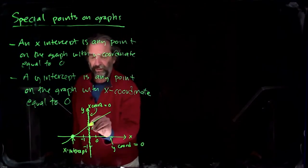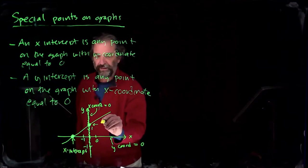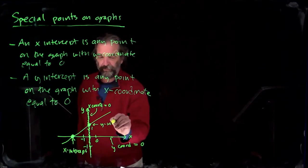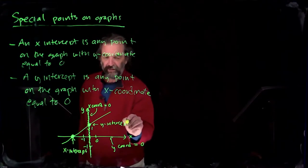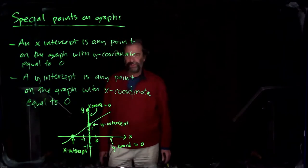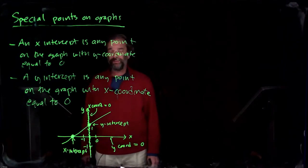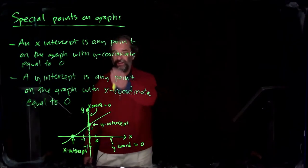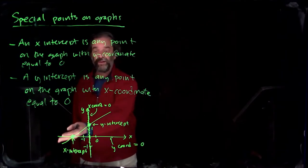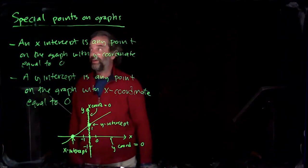And up here, where it crosses the y-axis, we would call that the y-intercept. So if the graph is the graph of a line, you're only going to have one intercept. I suppose you could have a lot of intercepts if the vertical or horizontal line, but most lines are just going to cross each axis one time.